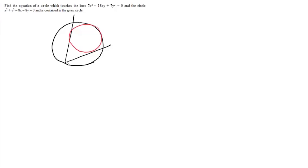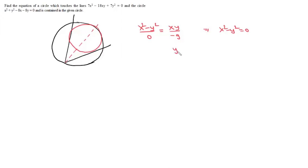The center of this circle lies on the angle bisector of these lines. The equation of the angle bisector is given by (x² - y²)/(a - b) = xy/h, which simplifies to x² - y² = 0, giving either y = x or y = -x. Since this circle lies in the first quadrant, the angle bisector will be along y = x.